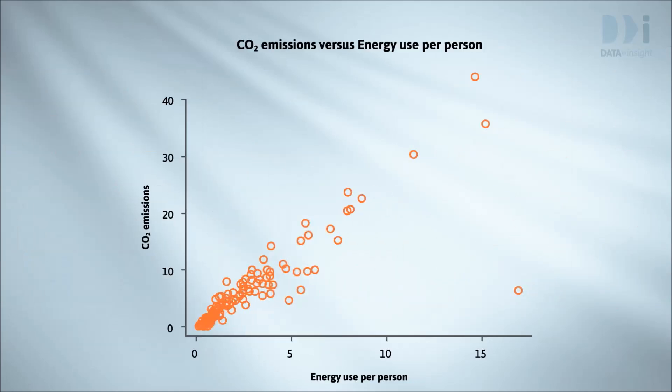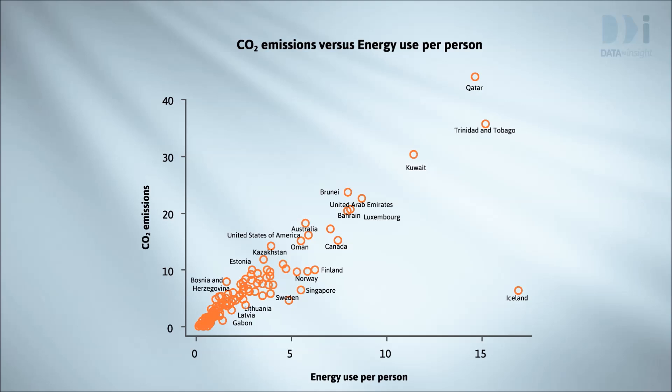Here is the scatter plot for all of the observations. This is the same graph, but with the countries that stand out labelled. What patterns do we see here? The relationship has a clear upward trend, which in this case looks like a straight line. Countries with higher average energy use tend to have higher CO2 emissions.